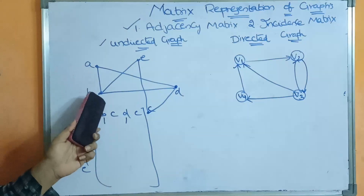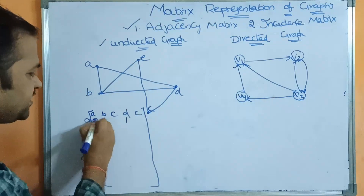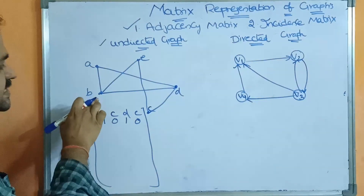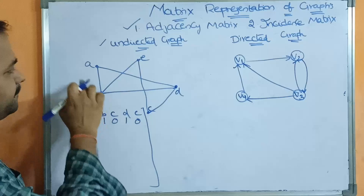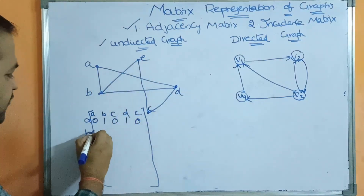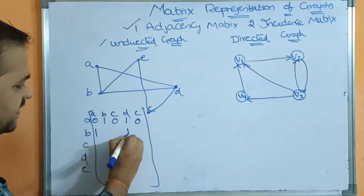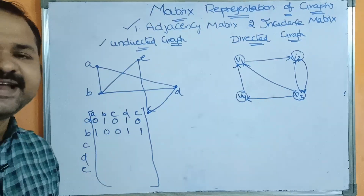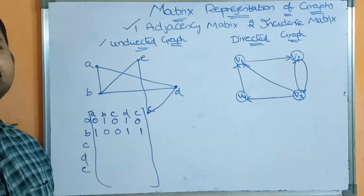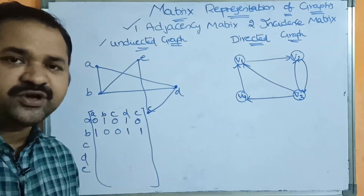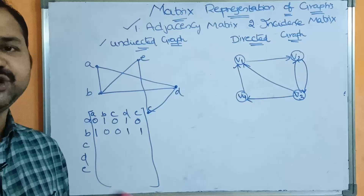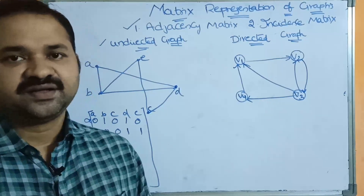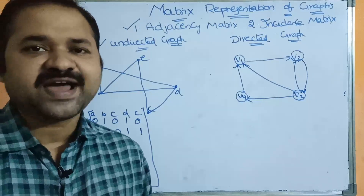A is associated with only two edges, so the remaining values are 0. Next, let us consider vertex B. B is associated with three edges: B-A, B-D, B-E. So B-A value is 1, B-D value is 1, B-E value is 1. Remaining values are 0. If there is an edge between two vertices, then the value is 1. If there is no edge, then the value is 0.